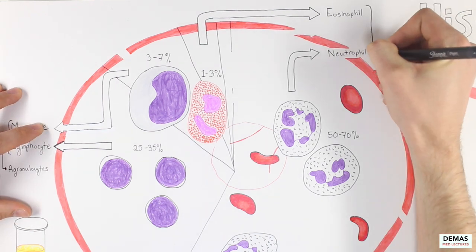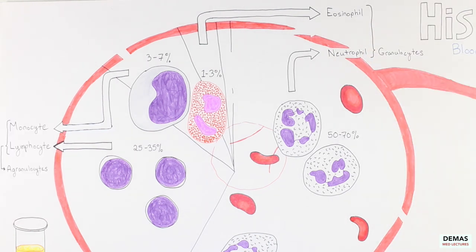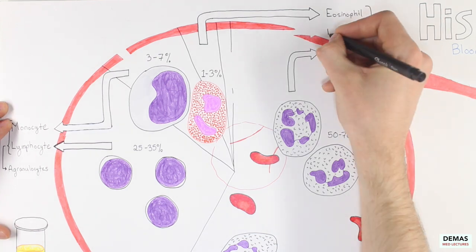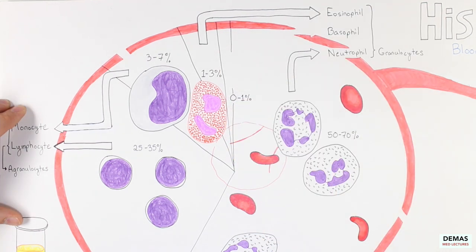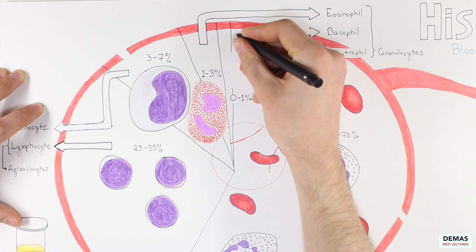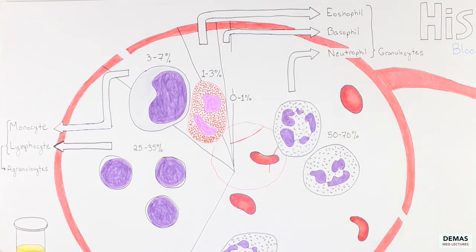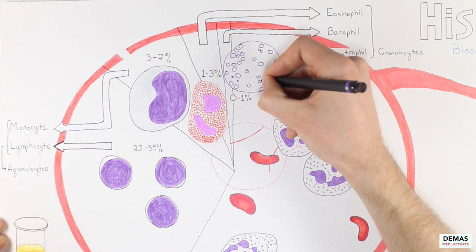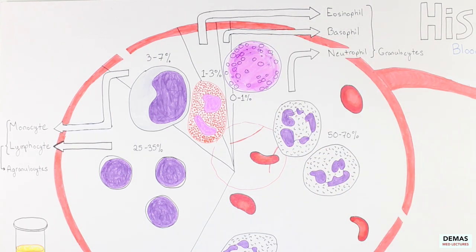The last cell type I would like to mention that is also a granulocyte and forms the remaining one percent of the white blood cell composition of the blood is the basophil. I also happen to love how this cell looks on Reich-Giemsa staining. The cell contains many large dark purple granules that often obscure the irregularly shaped nucleus.